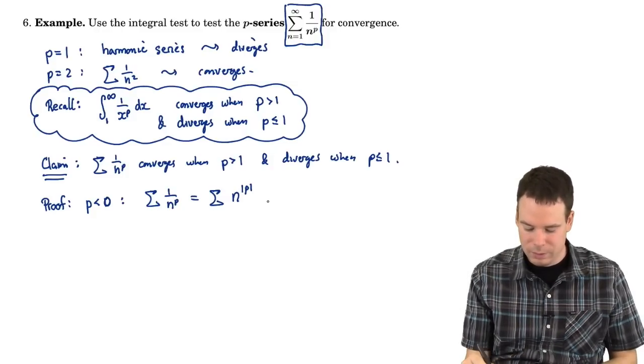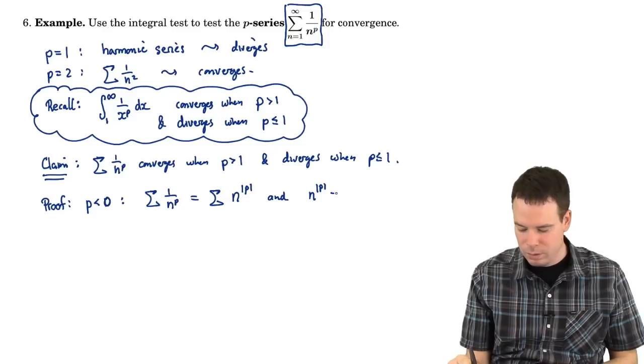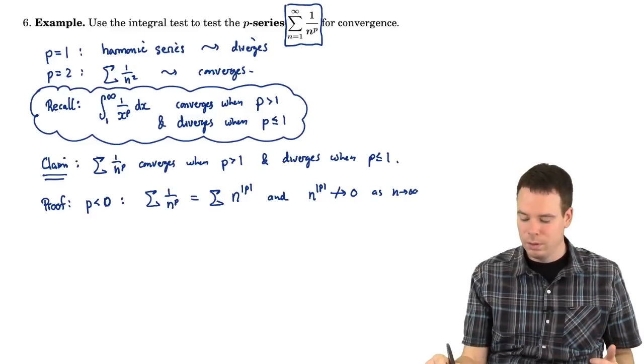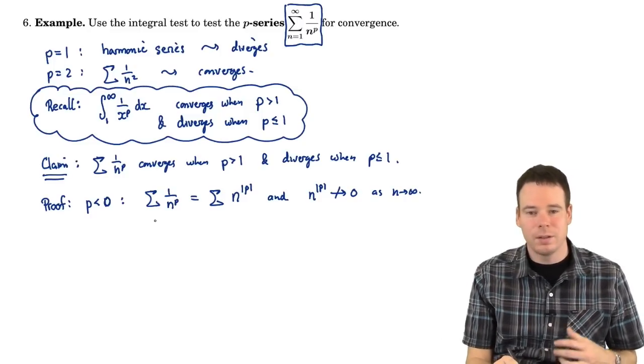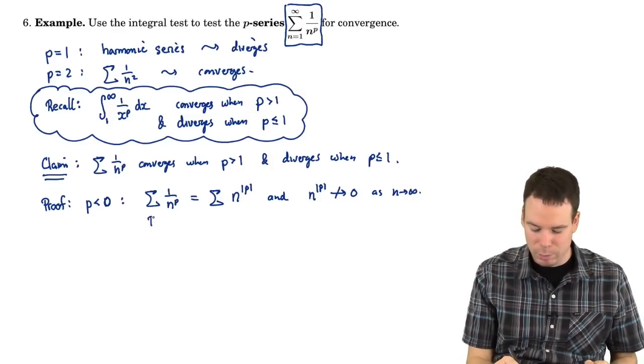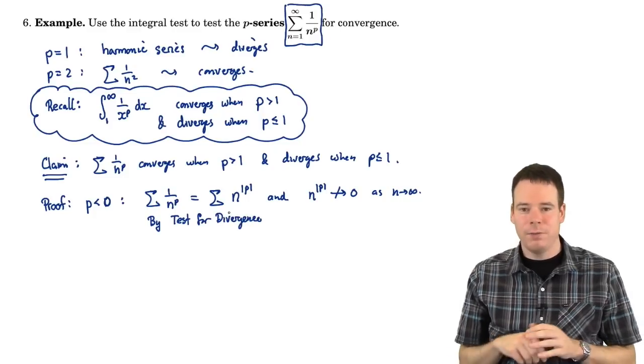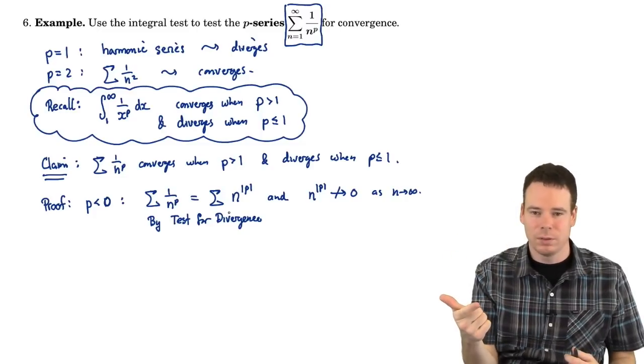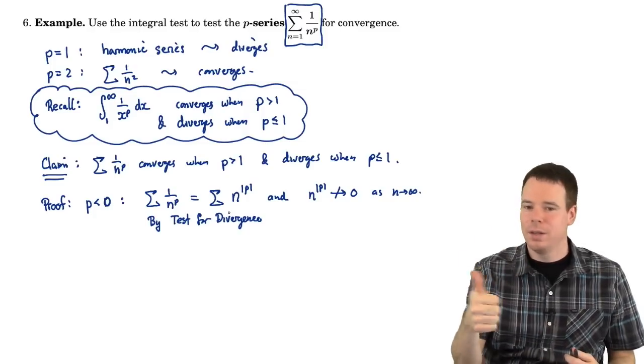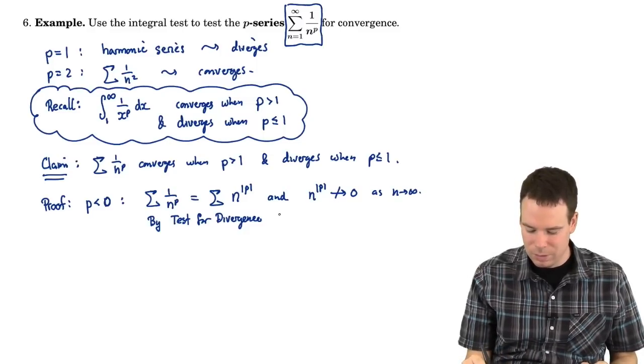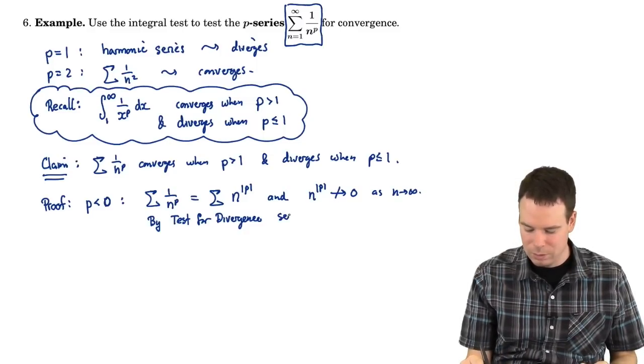So in this case, the series is that and the terms here do not go to 0 as n goes to infinity. The terms aren't going to 0. So we have then that the series can't possibly converge by the test for divergence. So by the test for divergence, so instead of the integral test, here we're using the test for divergence. What was the test for divergence? It said that if a series converges, the terms have to go to 0. If the terms don't go to 0, then the series can't converge. So that's the test for divergence. Here the terms don't go to 0, so the series diverges. So by the test for divergence, the series diverges.